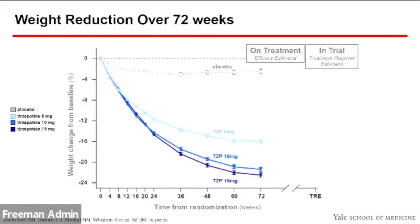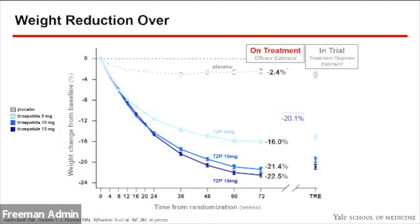On-treatment, there was a 2.4% reduction in the placebo group. For the tirzepatide groups, it was 16%, 21.4%, and 22.5% respectively. The placebo-subtracted difference for the 15 milligram dose was 20.1%. In-trial, the placebo group percent body weight reduction was 3.1%, and tirzepatide doses achieved 15%, 19.5%, and 20.9% respectively, with a placebo-subtracted difference of 17.8% for the 15 milligram dose.